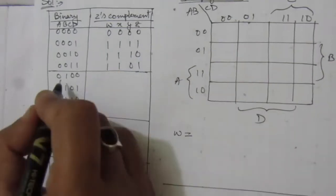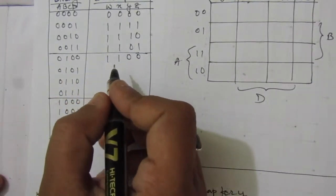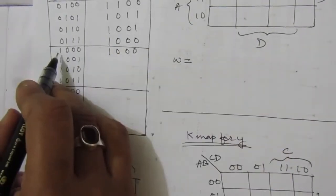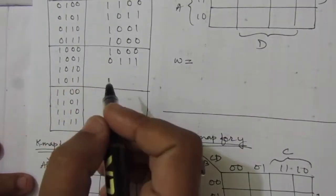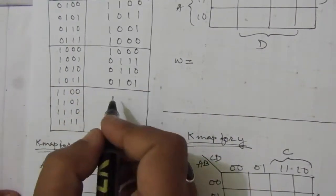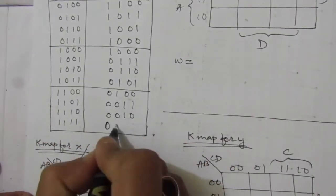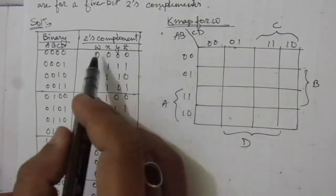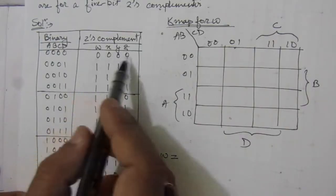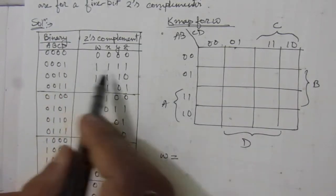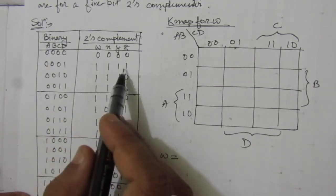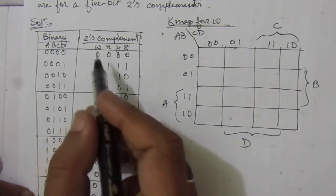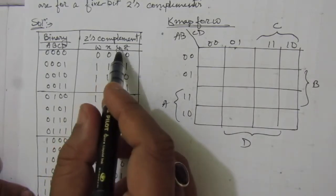Now let me write all the remaining entries. This is the two's complement table. We have found out the two's complement W, X, Y, Z — these are also binary digits. The right-hand side gives the two's complement of the number on the left-hand side. Now from this table we have to find out the expressions for W, X, Y, and Z.